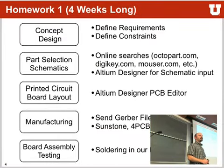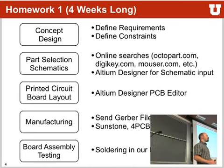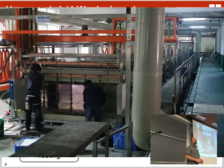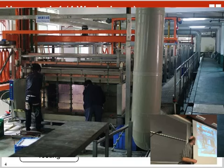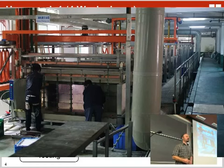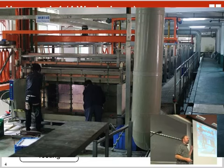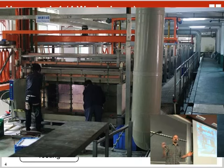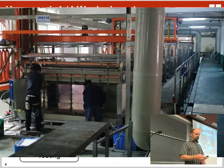Then you get the PCB manufactured. You can do it at home with chemicals — photo processing, etching the copper away — or use a fab house. The picture here is probably from somewhere in China where huge panels are etched at once. It usually smells really bad because of all the chemicals. Later in the semester we'll hopefully visit the local PCB fab house that we're using for homework number one.